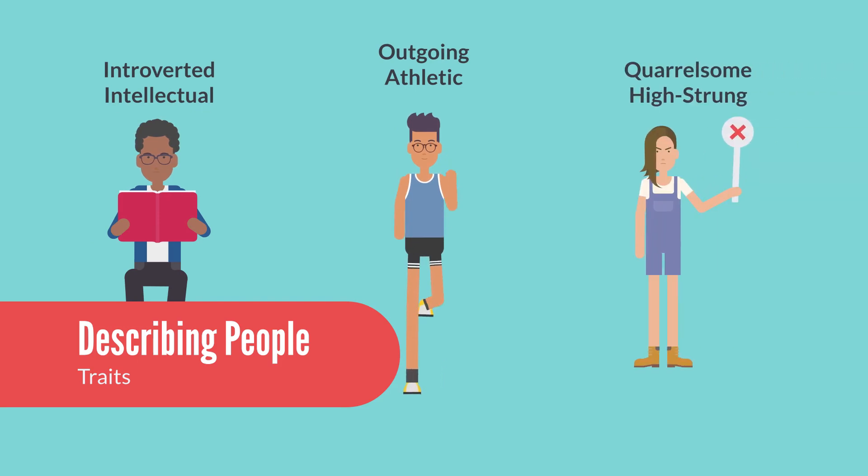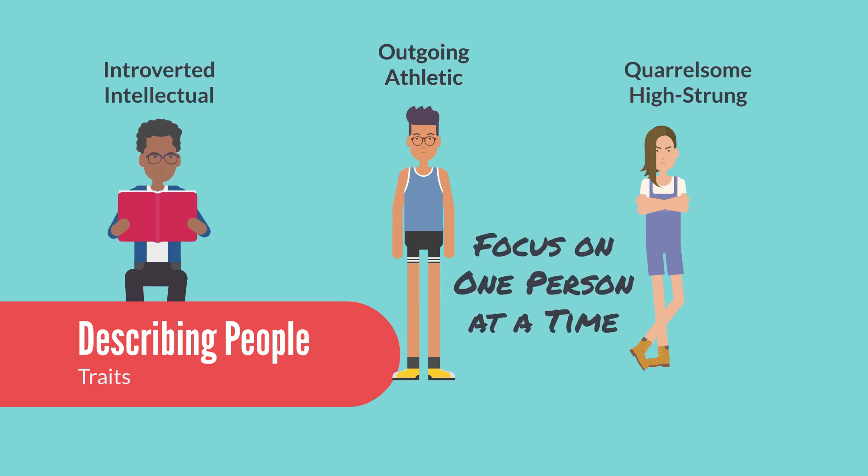You'll list stable traits they have. You might describe one person as introverted and intellectual, another person as outgoing and athletic, and another person as quarrelsome and high-strung. These sorts of explanations focus on one person at a time. There is another way to describe personality, however, and that's to describe people in relation to other people.